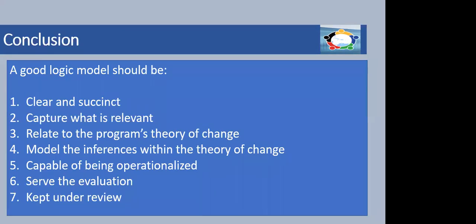So just in conclusion: a logic model should be clear and succinct. It should really capture only what's relevant — don't try and fill up your logic models with everything you can think of. Please relate the logic model to the programme's theory of change; there are different ideas, but they do work hand in glove. You should be able to model the inferences within the theory of change — if you do X, Y will occur. Throughout the logic model, there should be some inference from one part of the model to the next.